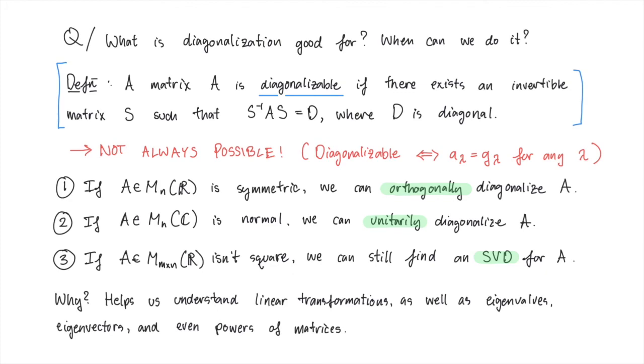The very last thing I want to answer here is, why do we care about diagonalization at all? The answer is that it helps us understand linear transformations, since it makes it a lot easier to get a hold of the eigenvalues and eigenvectors of a matrix. As some of you have been noticing on the last couple of assignments, it's also very useful when it comes to dealing with powers of matrices.